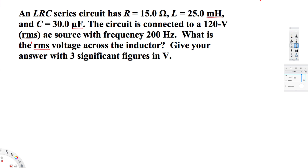Let's look at this problem. This question is asking: an LRC series circuit has R equal to 15 ohms, L equal to 25 millihenries, and C equal to 30 microfarads. The circuit is connected to a 120 voltage RMS AC source with frequency 200 hertz. What is the RMS voltage across the inductor?